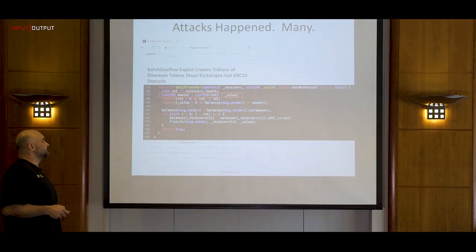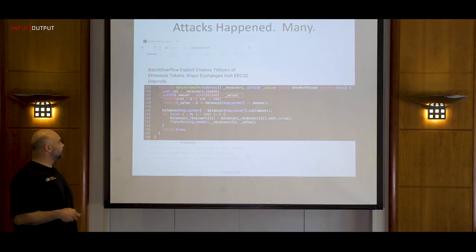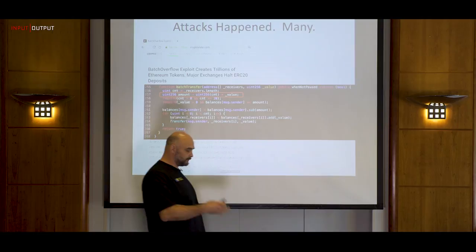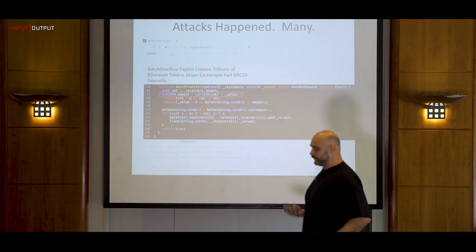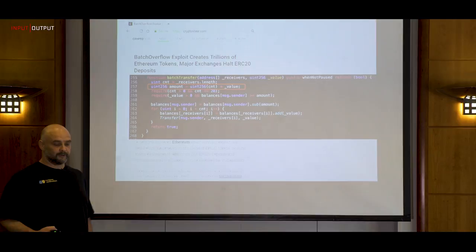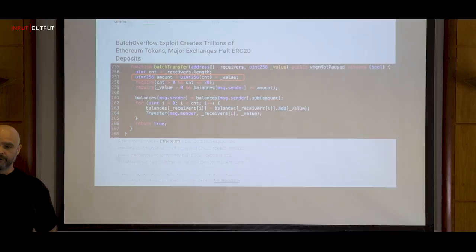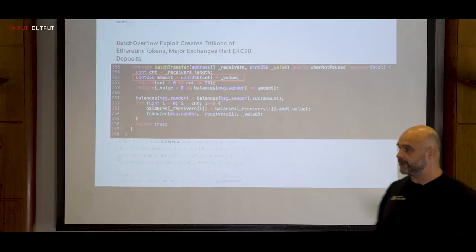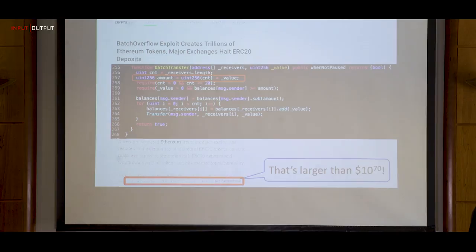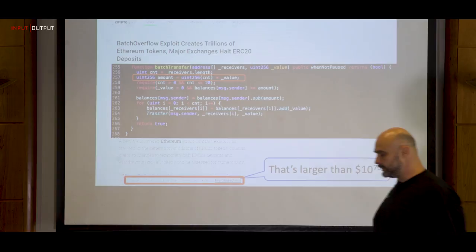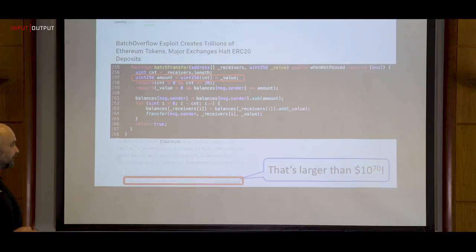A more recent example is the BeautyCoin case, which happened just two months ago and has a very similar problem: there is a multiplication between a counter and a token value, and that multiplication is not protected against overflow. That overflow can be catastrophic — it allowed transactions to be initiated that violated the protocol's correctness. A huge amount of tokens, on the order of 10^70, was stolen, which effectively destroyed the coin.